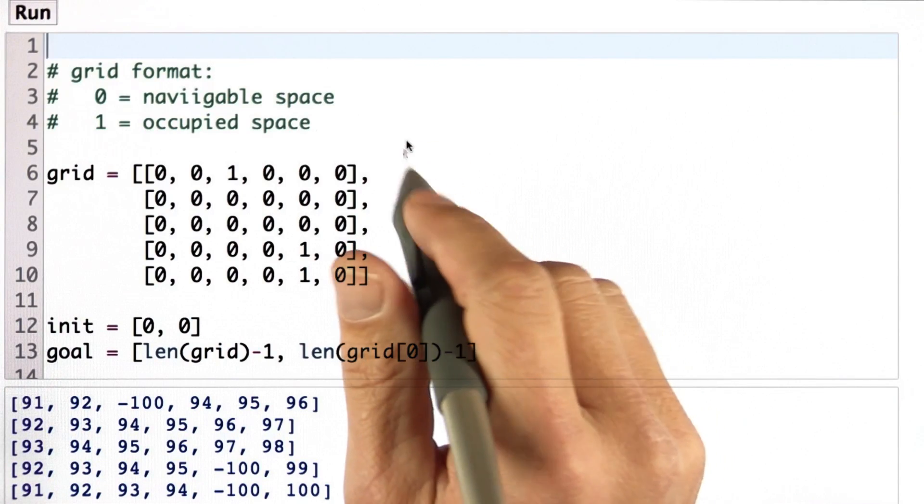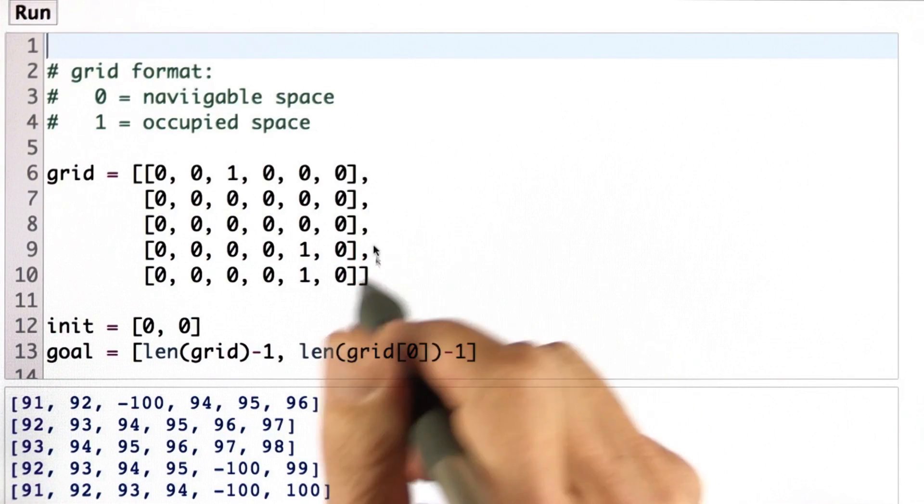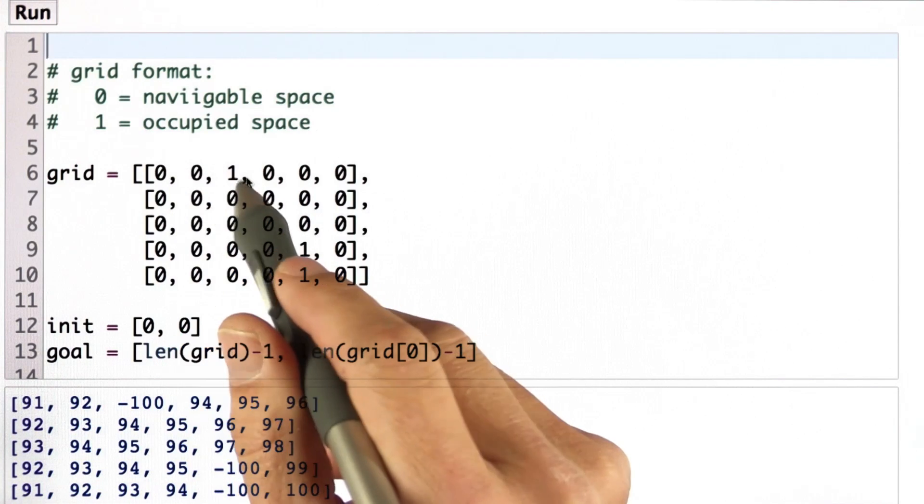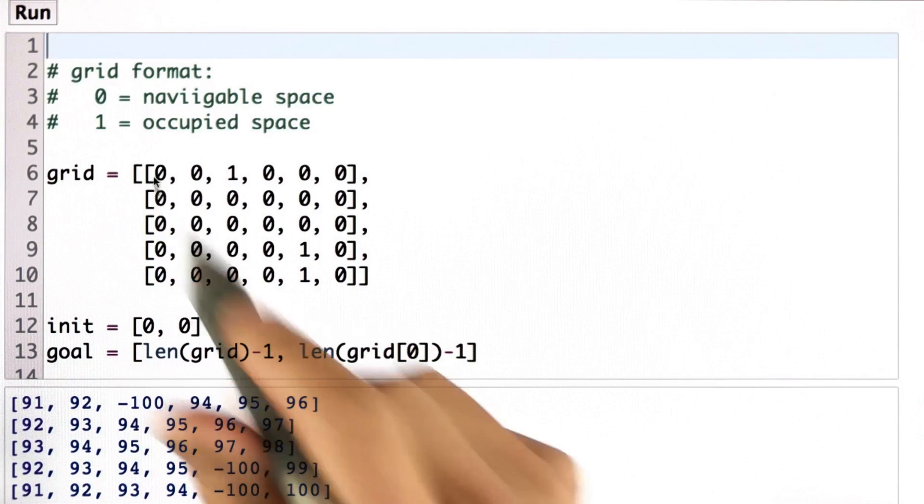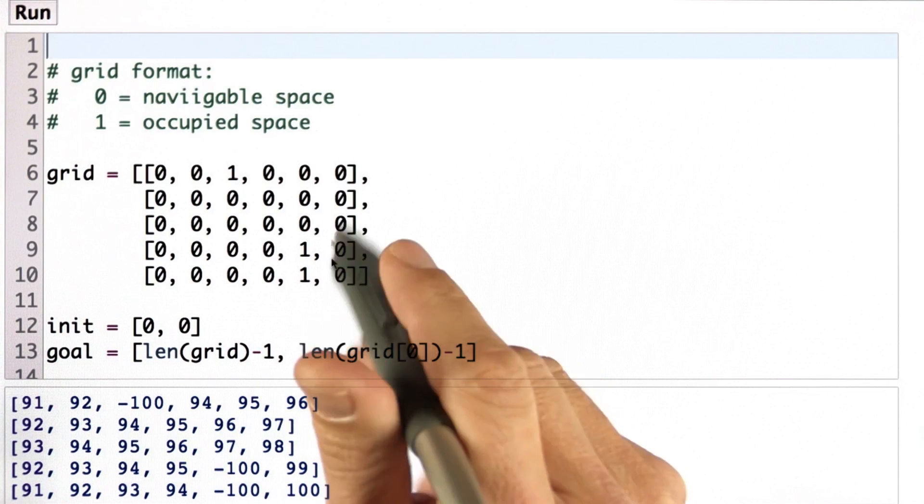So let's look at a very simple piece of code that implements this planning algorithm. You have a grid here as before with zeros and ones. You're familiar with it, a starting location on the top left, a goal location on the bottom right.